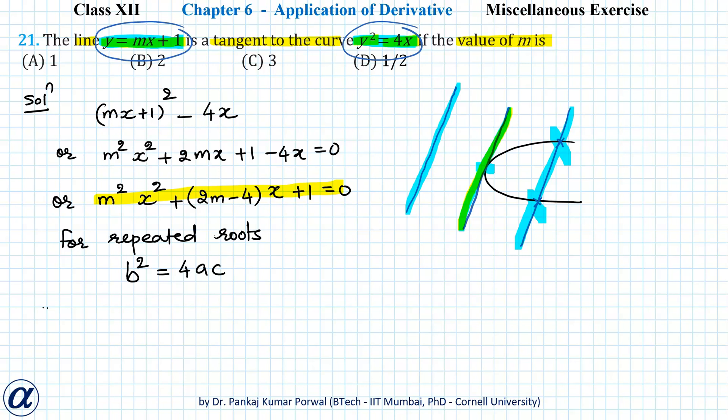This gives me (2m - 4)² = 4m² × 1, or 4m² - 16m + 16 = 4m². The 4m² terms cancel, so I get -16m + 16 = 0, which gives me 16m = 16 or m = 1.